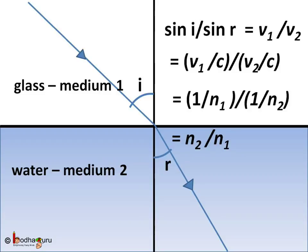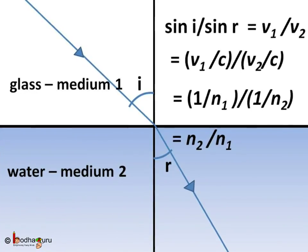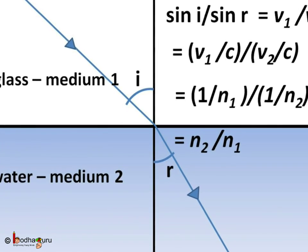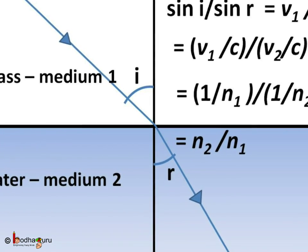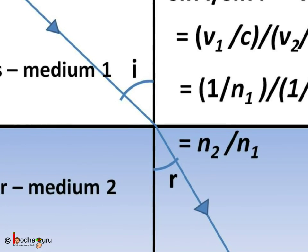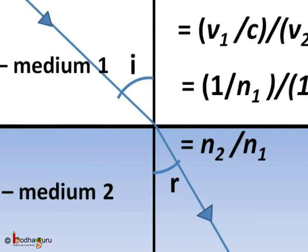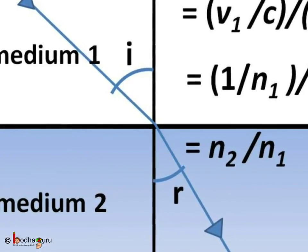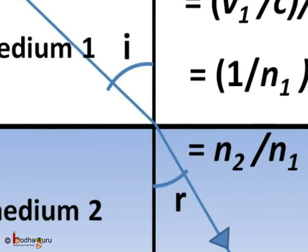This is called the relative refractive index. So if we know the refractive index of any two mediums, we can find the relative refractive index when light is passing between those two mediums.